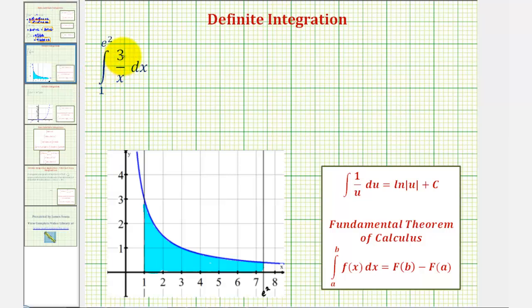We want to evaluate the definite integral of three divided by x from one to e squared. If we look at the graph of f of x equals three divided by x over the closed interval from one to e squared,